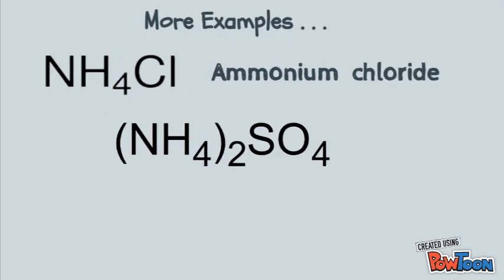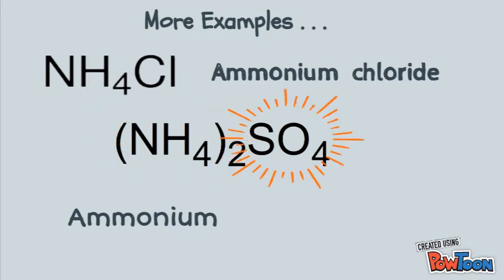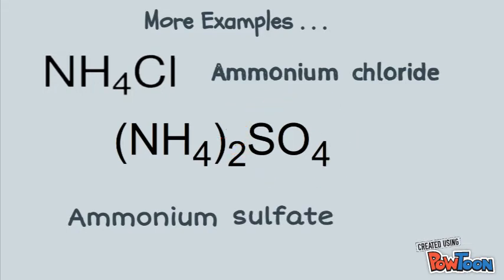Your next example is (NH₄)₂SO₄. The NH₄ is going to be your cation, and that's ammonium again, and the SO₄ is going to be your anion. You look that up on your list — it's sulfate. So your answer here is ammonium sulfate. Just look at your list and identify those polyatomic ions as needed.